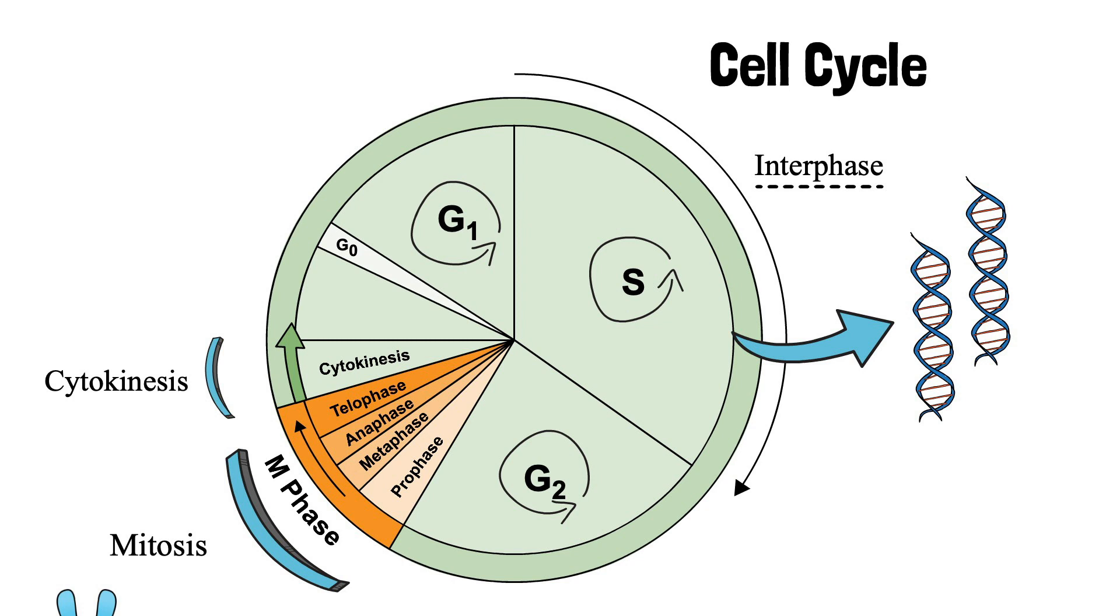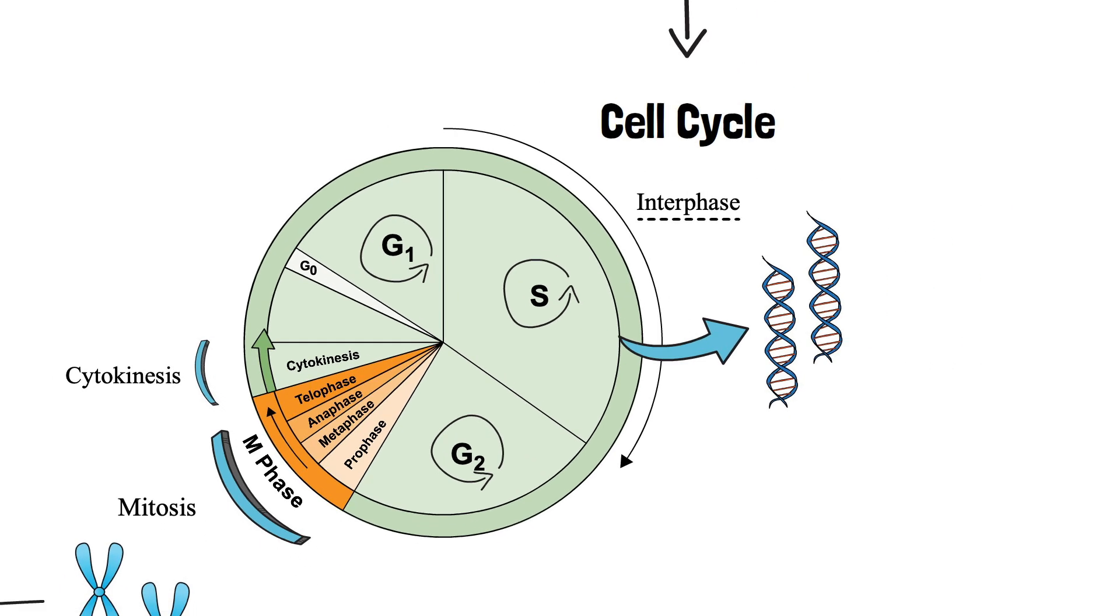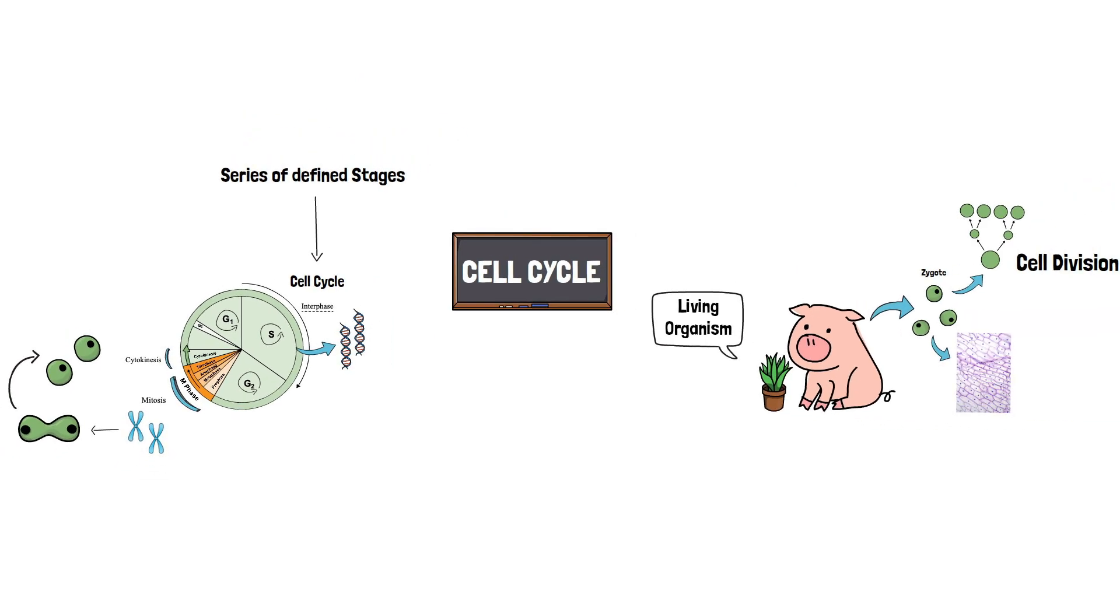M phase usually lasts only an hour or so in mammalian cells, but interphase may extend for days, weeks, or longer, depending on the cell type and its condition. That's all about the cell cycle.